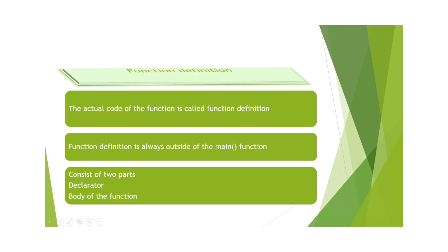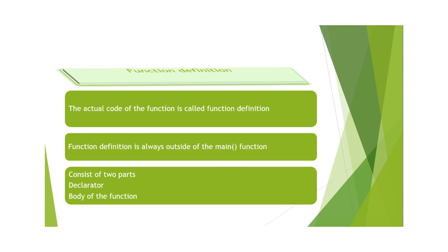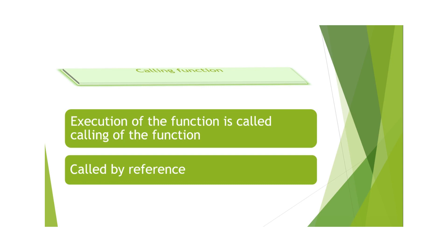اس کے بعد آتا ہے function definition۔ Function کا actual code جو ہے وہ function definition کہلاتا ہے۔ Function definition ہمیشہ main function کے باہر ہوتی ہے اور دو حصوں پر مشتمل ہوتی ہے: declarator اور body of the function۔ Function کے اپنے statements دو curly braces کے اندر execute ہوتے ہیں۔ اسے main function سے پہلے یا بعد میں رکھ سکتے ہیں، لیکن main function میں call کرنا لازمی ہے۔